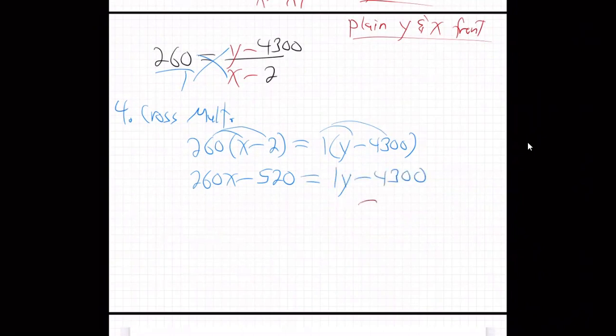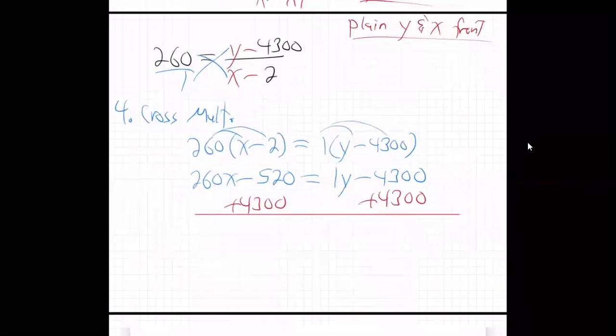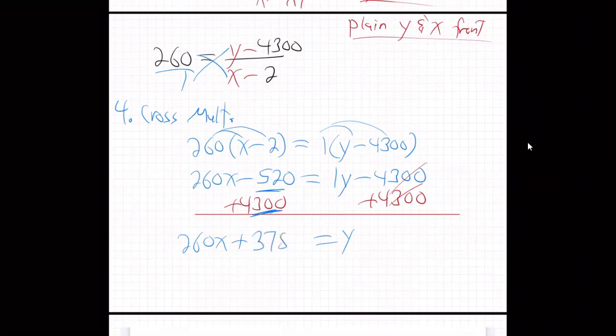Equals one times Y minus 4,300. And you can get Y alone. Add 4,300 to both sides. Boom, boom. So one times Y is just Y equals 260X plus, I'm going to subtract 4,300 minus 520. I'm getting 3780. There it is.